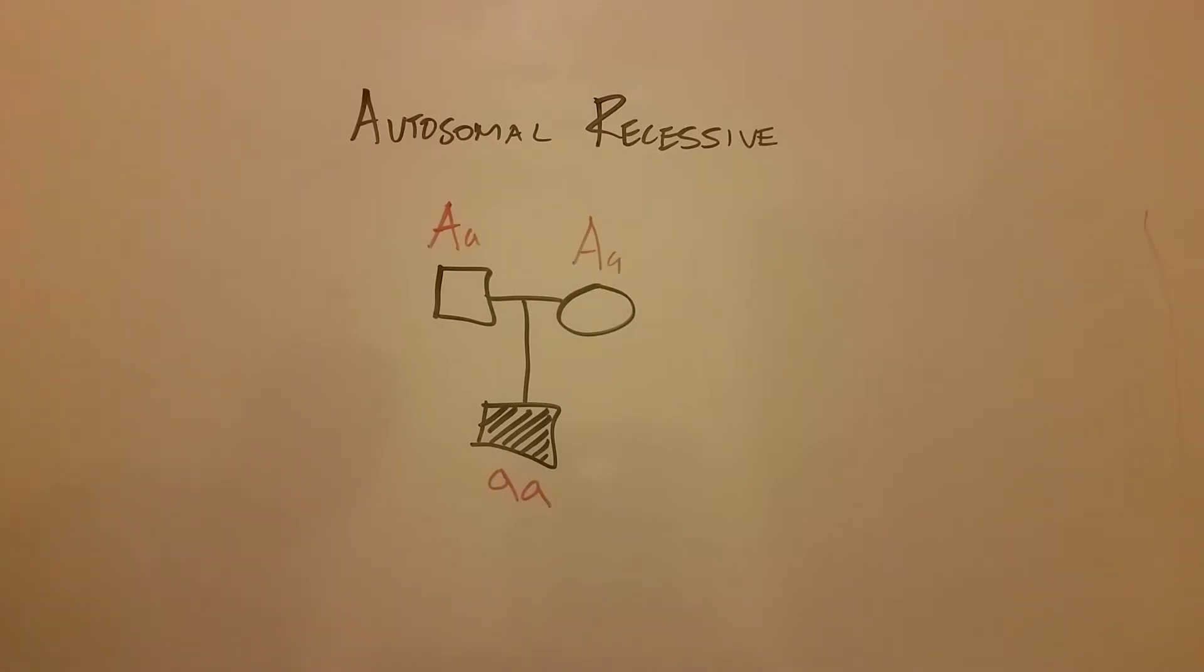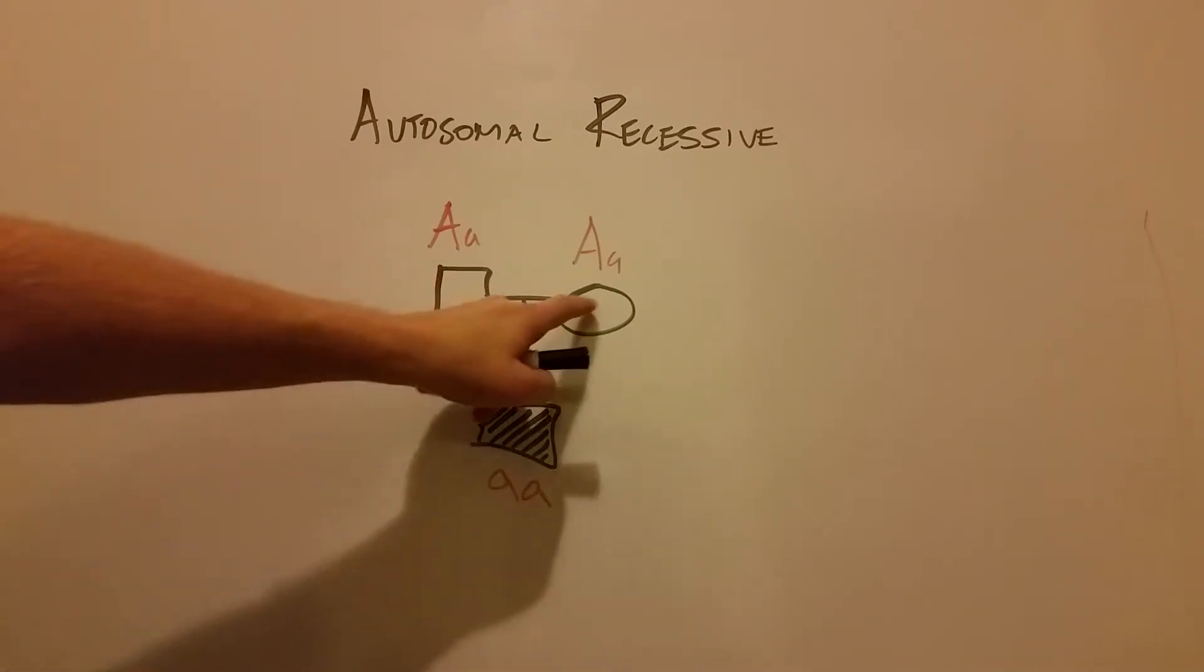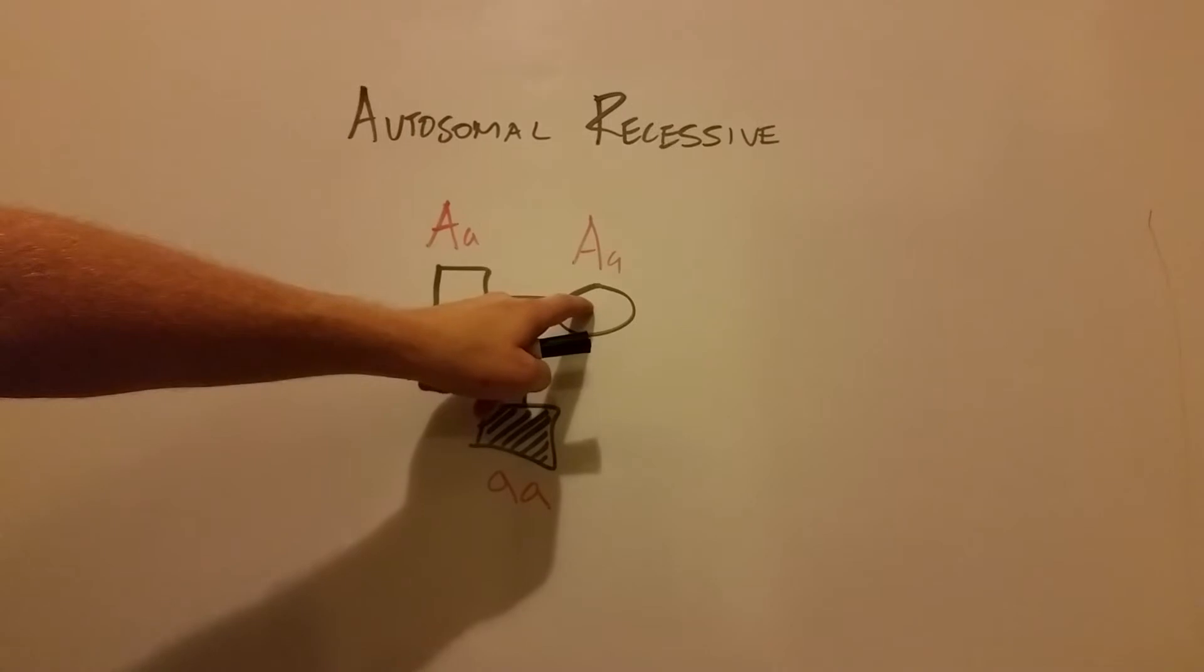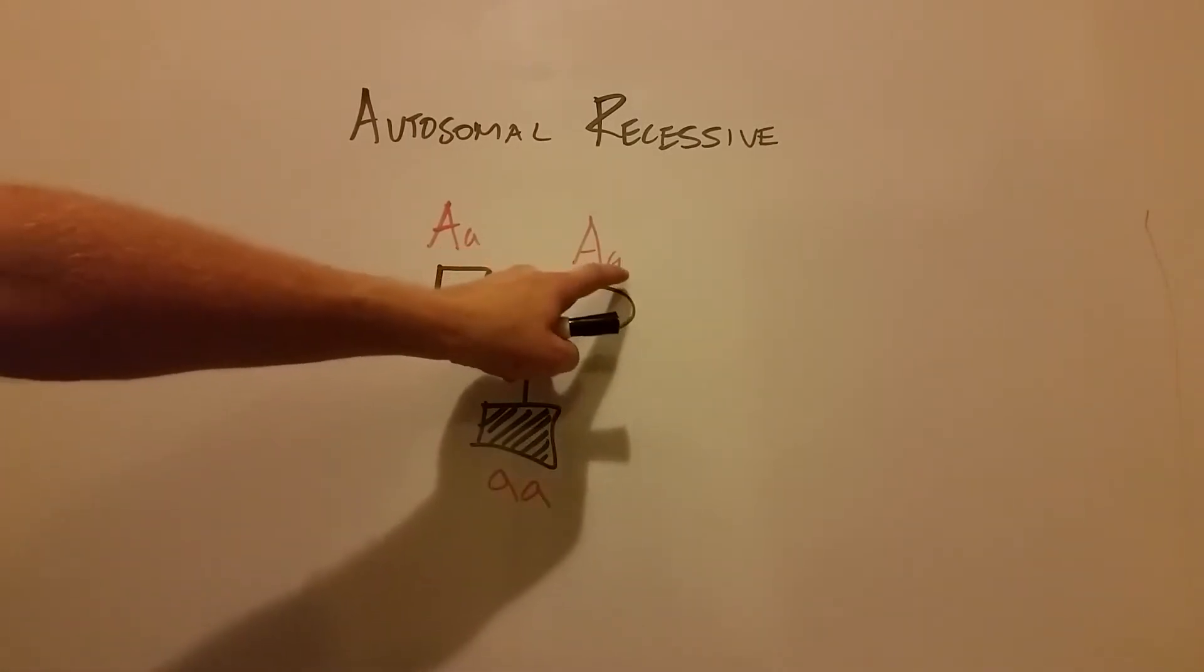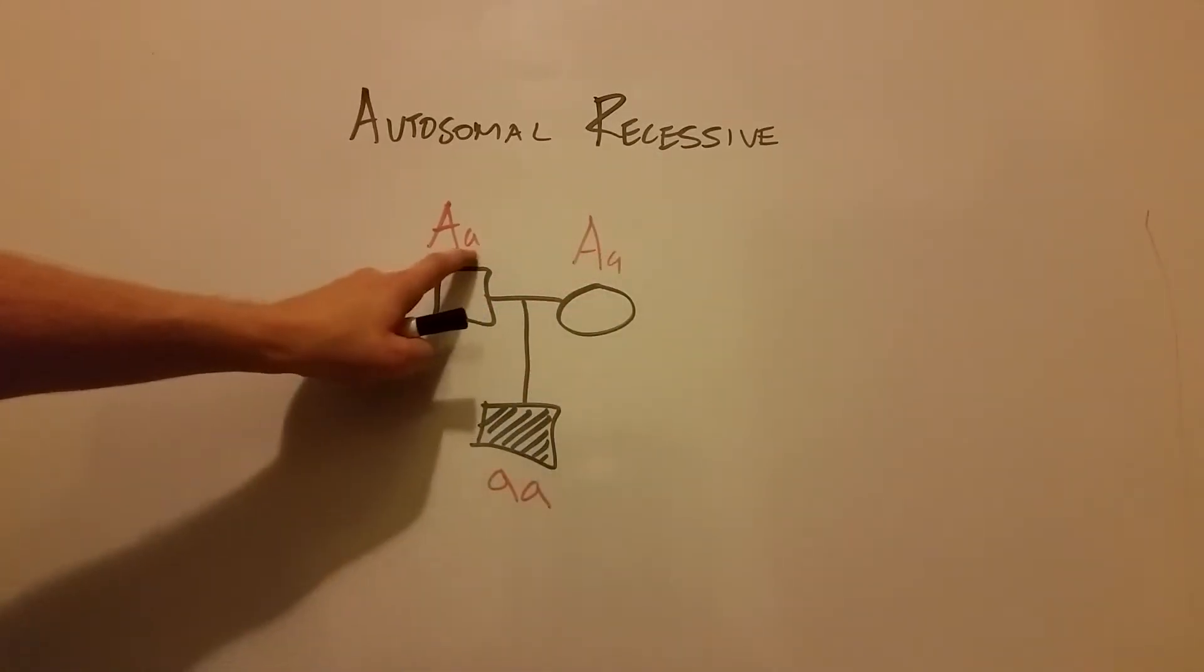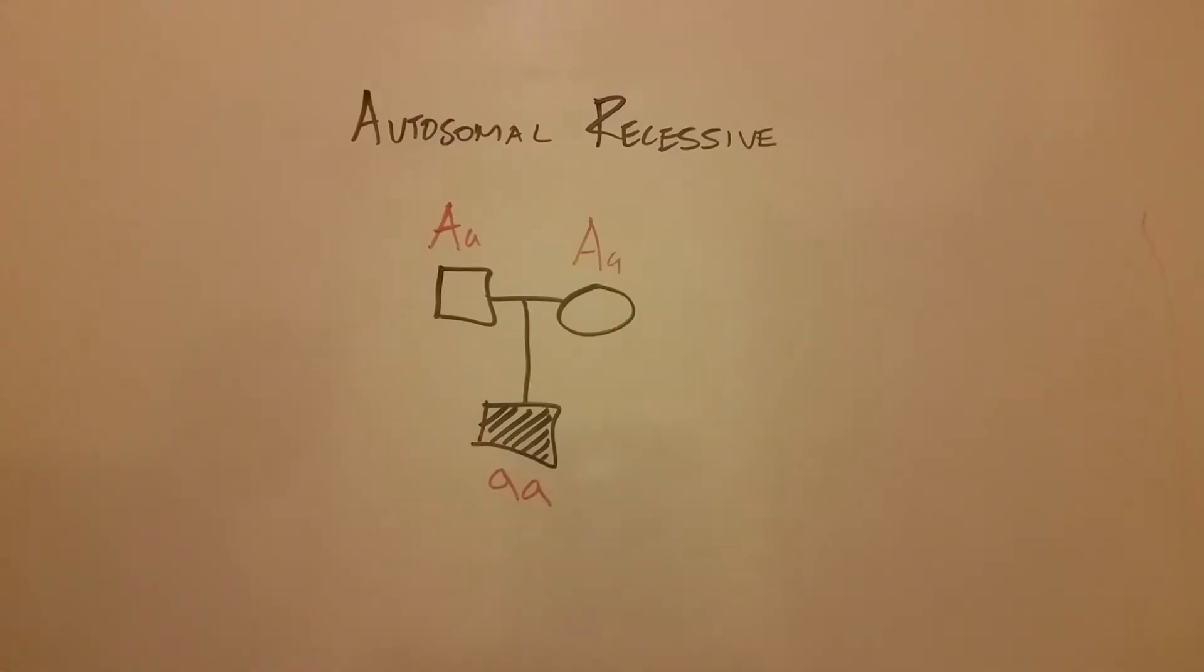Let's say it's cystic fibrosis, for example. Although neither of them has cystic fibrosis, they're both carriers for it. You can see here that they both have a recessive allele, or recessive copy of that DNA.